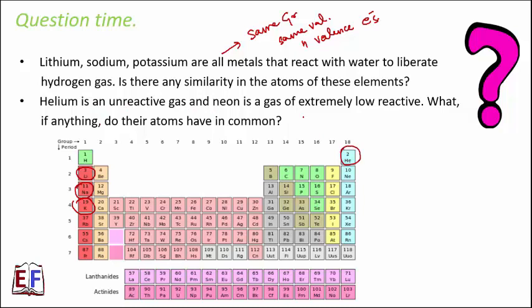Helium is an unreactive gas and neon is a gas of extremely low reactivity. What, if anything, do their atoms have in common? Again, they belong to the same group, and they also have a filled valence shell — their outermost shells are filled — therefore they do not tend to react with any other element.